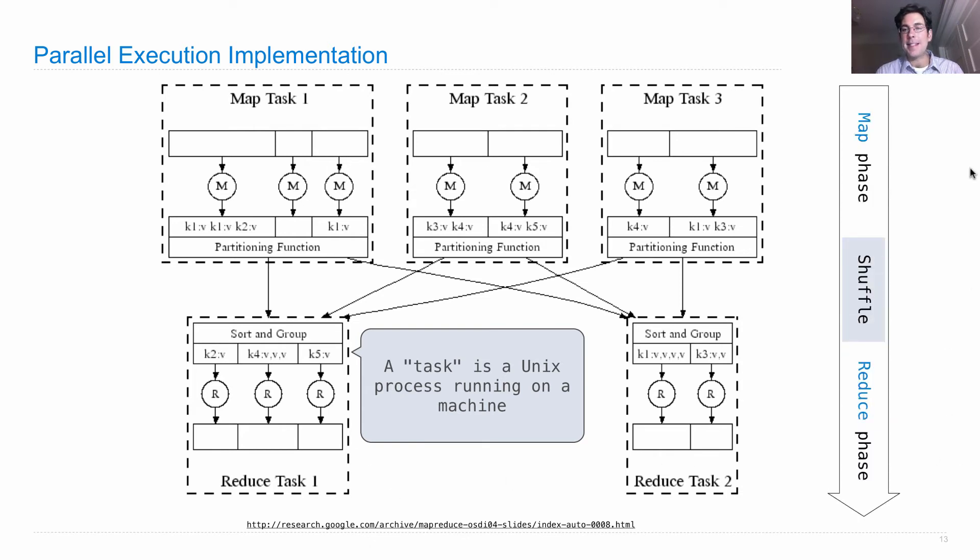As this is running, there's a map phase, what's called a shuffle phase, which uses some partitioning function to decide which keys go to which task. And then when all of the keys that go to this task, which are in this case k2, k4, and k5, come together, it's up to the reducer to sort and group those values by their key.